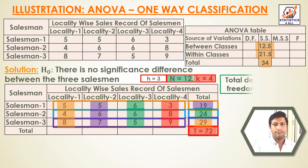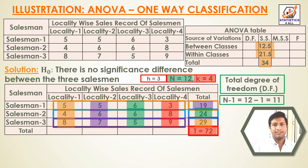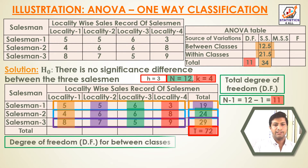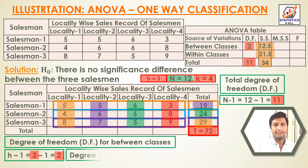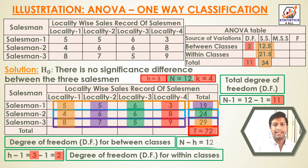Total degrees of freedom = N − 1 = 12 − 1 = 11. Degrees of freedom for between classes = H − 1 = 3 − 1 = 2. Degrees of freedom for within classes = N − H = 12 − 3 = 9.